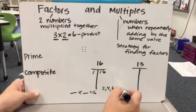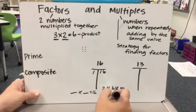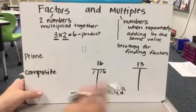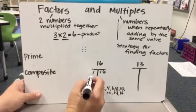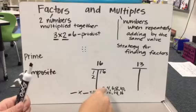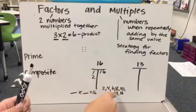Now I'm 8, 10, 12, 14, 16. I landed right on 16. That means 2 is a factor of 16. So how many 2's did I need? 1, 2, 3, 4, 5, 6, 7, 8.